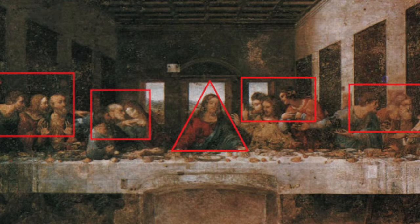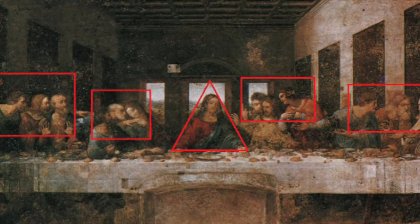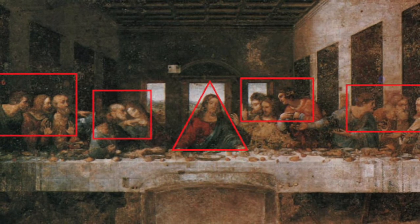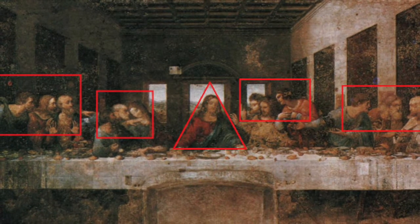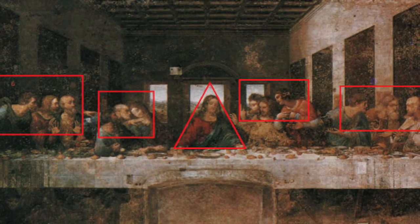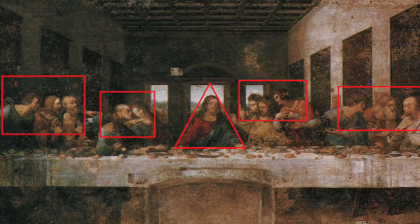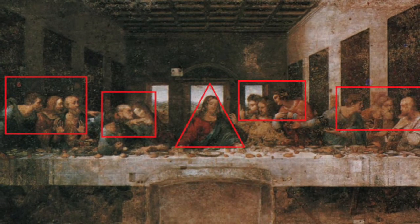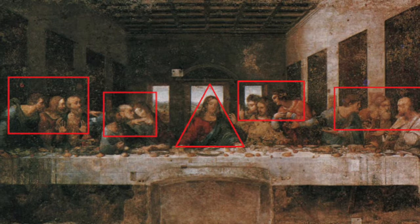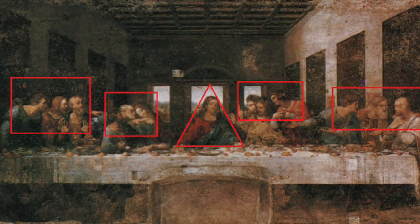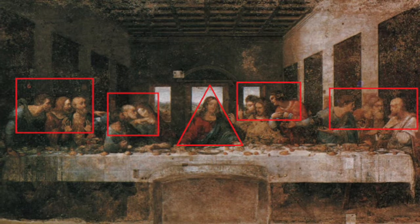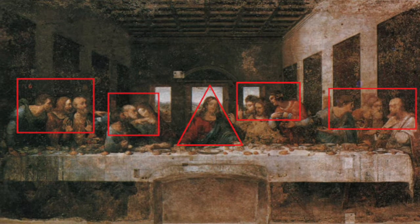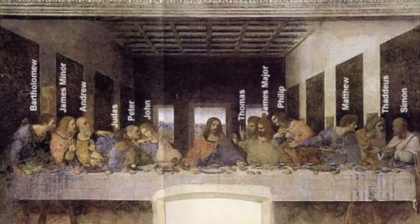There are four sets of three apostles at the table beside Christ, and these numbers could have been important to Da Vinci for symbolic reasons. For example, there are four Gospels in the Bible, and three is the number of the Trinity, with Jesus also symbolizing the Trinity since he is depicted in a triangle form with his body.